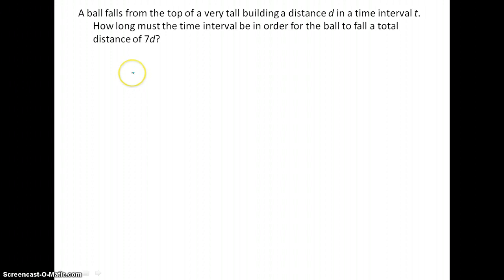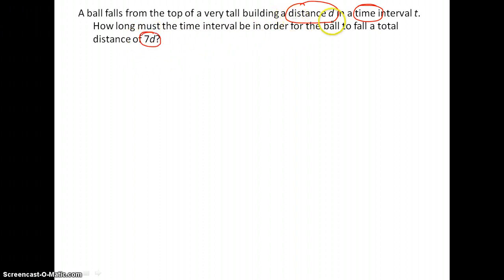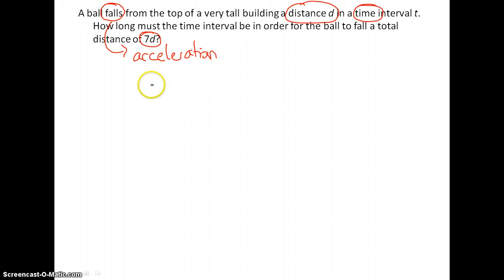Number nine: a ball falls from the top of a very tall building a distance d in a time t. How long must the time interval be for the ball to fall a total distance of 7d? We only have distance and time, but there's one other variable implied — the ball falls, so there is acceleration, and we know acceleration is 10 meters per second squared. We don't need the actual number here. What formula involves distance, time, and acceleration?